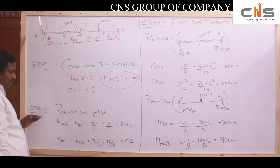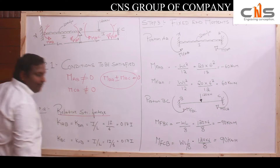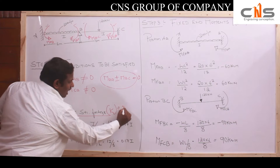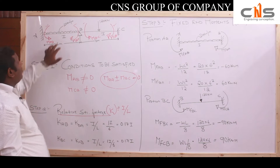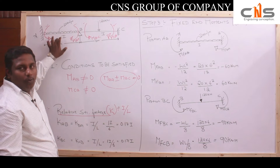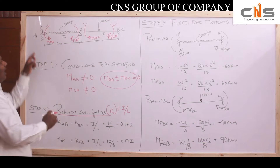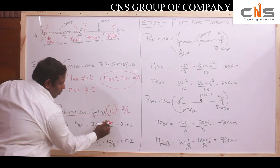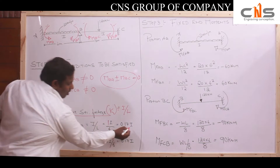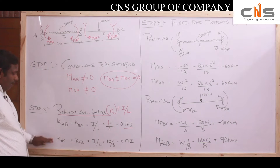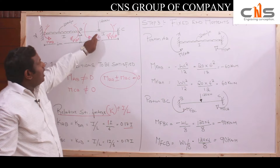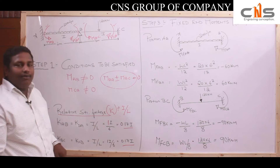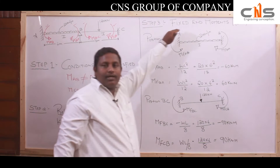The second step is finding the relative stiffness factors K, where the formula is K equals I divided by L. For both portions the moment of inertia I is 1. So K for AB equals I by L, that is 1 divided by 6, which gives 0.17I. Similarly for portion BC, I is 1 and length is 6, so K is also 0.17I.